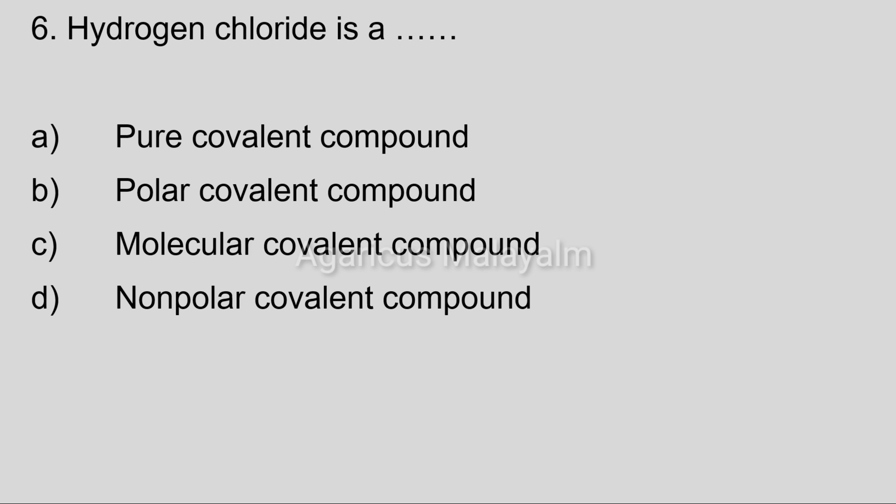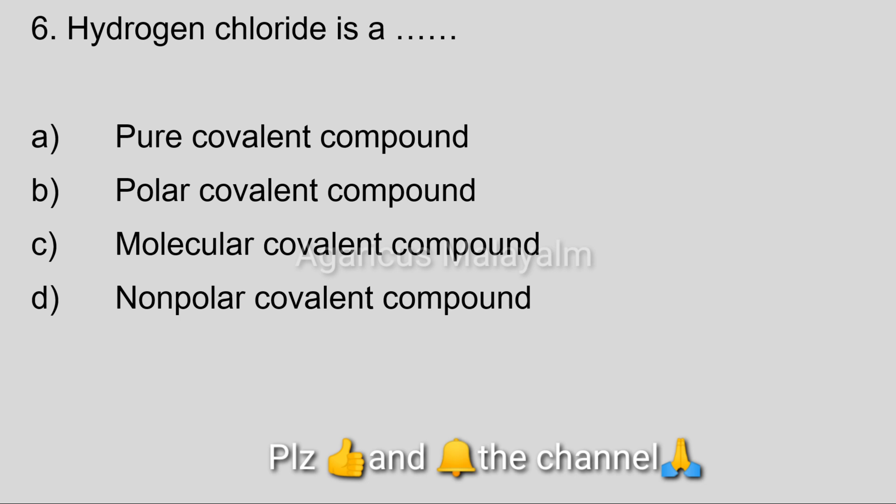Sixth question: hydrogen chloride is a — ? Option A: pure covalent compound. Option B: polar covalent compound. Option C: molecular covalent compound. Option D: non-polar covalent compound.